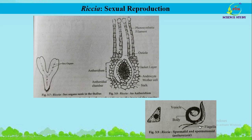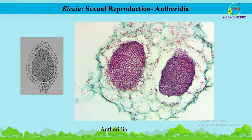Each androcyte mother cell divides diagonally to form two androcytes or spermatids. The spermatozoid, also known as antherozoid, of Riccia contains three parts: a vesicle, a body, and two flagella. Each antherozoid is a minute, slender, curved, and flagellated structure. The two flagella are inserted at the anterior end. The body possesses elongated cytoplasm, and the unusual cytoplasm attached to the posterior end forms the vesicle. Here you can see the actual photograph of Riccia antheridia alongside the diagram.